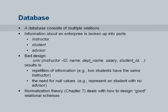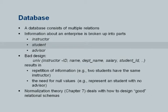A database has multiple relations. In our sample database for a university, we have many things including instructor and student. There is an advisor relation which says which instructor is the advisor for which student. There are many more which we will see later, such as what are the courses, which courses are offered in which semester, which instructor is teaching which courses, and which student has taken which course offering.